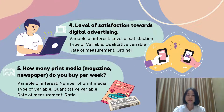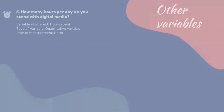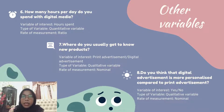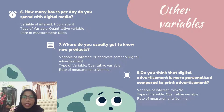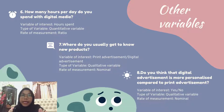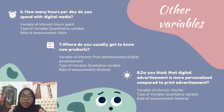The fourth variable is the level of satisfaction of respondents toward digital advertising. The scale of measurement is ordinal and it is under qualitative variable. The fifth variable is how many print media does the respondent buy per week. The scale of measurement is differential and the type of variable is quantitative. Number six: how many hours per day do you spend with digital media? We are using ratio measurement, which is under quantitative variables. Number seven: where do you usually get to know about new products — print advertisement or digital advertisement? We are using nominal measurement, which is under qualitative variable. Number eight: yes or no, do you think that digital advertisement is more personalized compared to print advertisement? We are using nominal measurement, which is under qualitative variable.